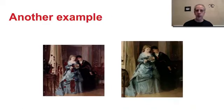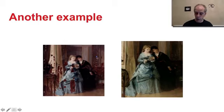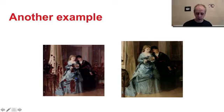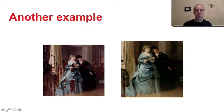Inpainting is sometimes also called fill-in, because we're filling in the regions of problems — the regions of deterioration — with information from the surrounding. Sometimes we fill with information from near areas, sometimes from far away areas across the whole image. There are even techniques that do inpainting using a database of images where you look for similar things.